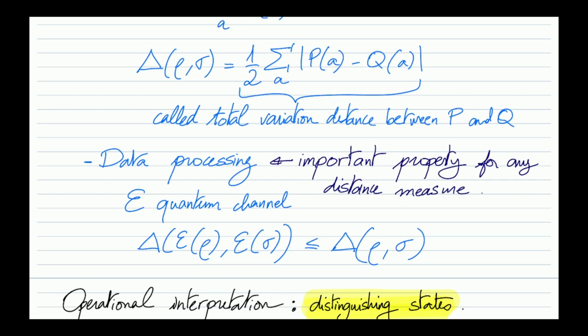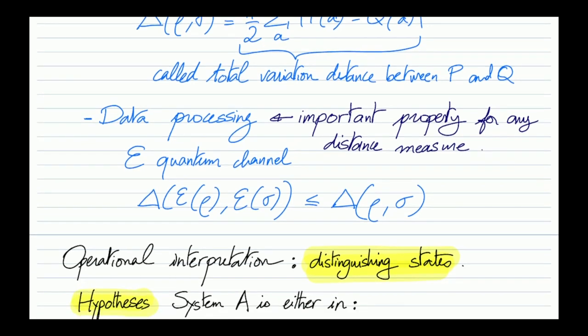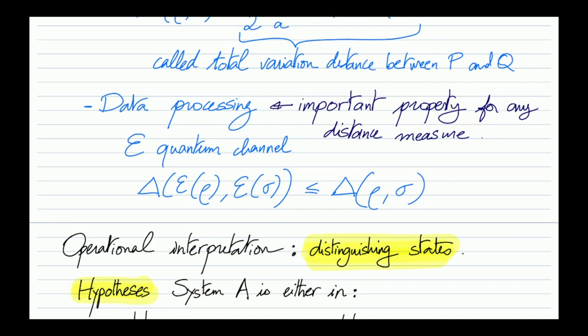Another important property satisfied by this distance measure is the data processing inequality, which is fundamental for any distance measure. It says that if I process my two states further with the same map, the distance between them can only decrease — their distinguishability can only decrease. A valid physical process is a quantum channel, denoted E, and the trace distance when I apply the same channel E to the two states can only decrease.